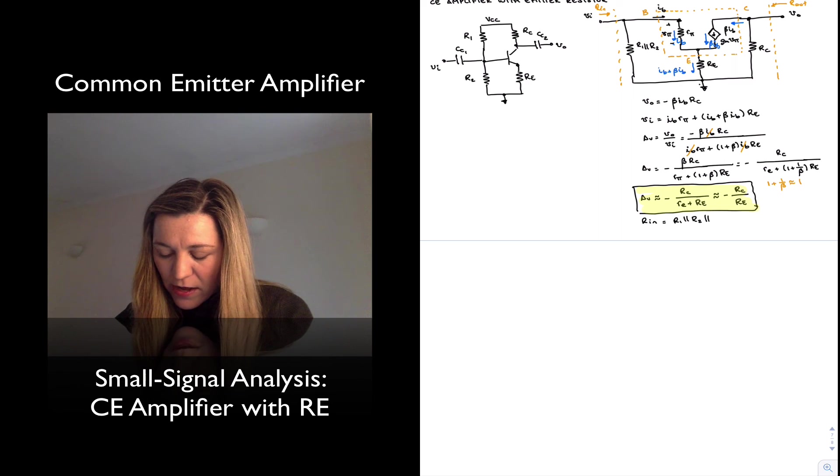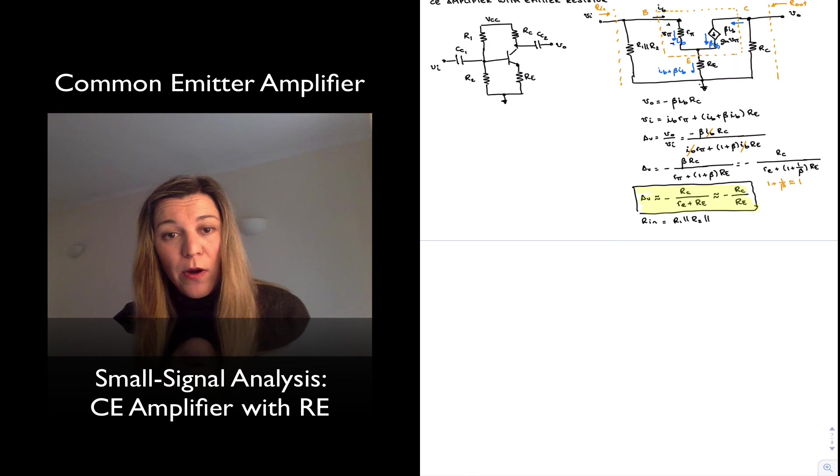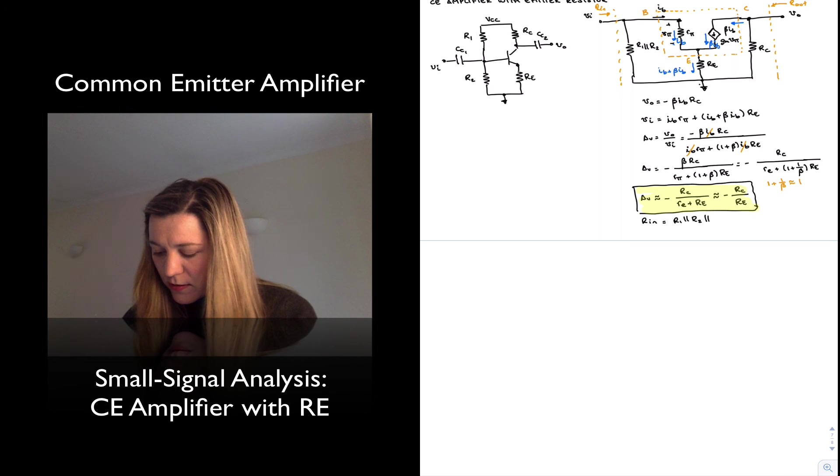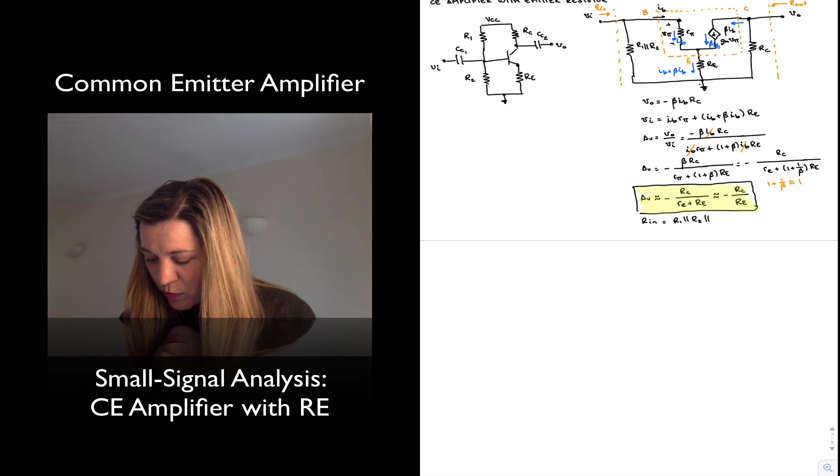And then notice that we have that additional current beta times I_B flowing through r_e, and that's going to make our resistance r_e look much larger, or beta times larger. So we will have r_pi plus beta, plus beta, and so this is equal to R1 in parallel with R2 in parallel with beta times (little r_e plus R_E).